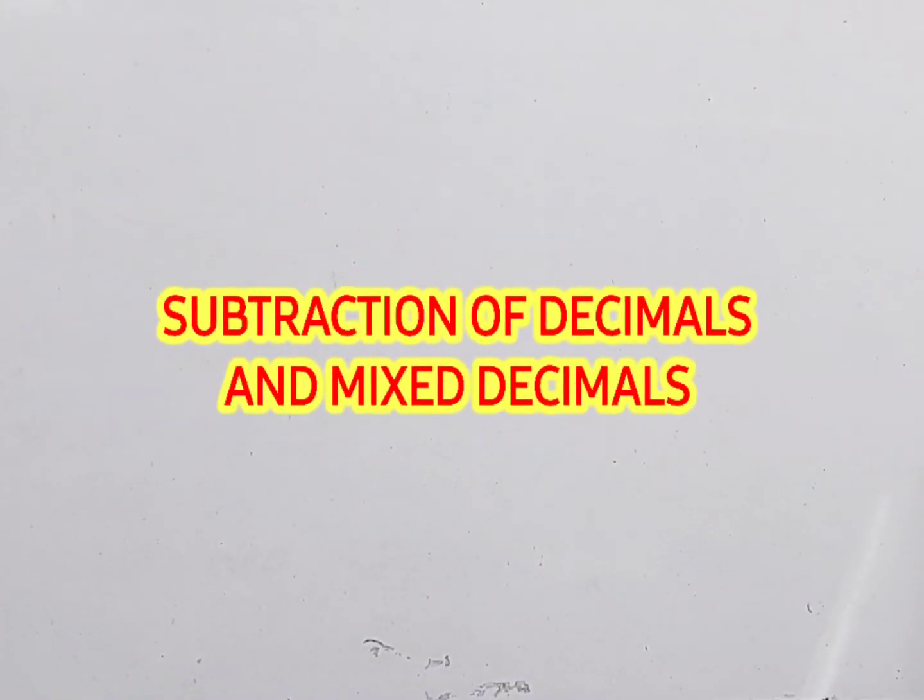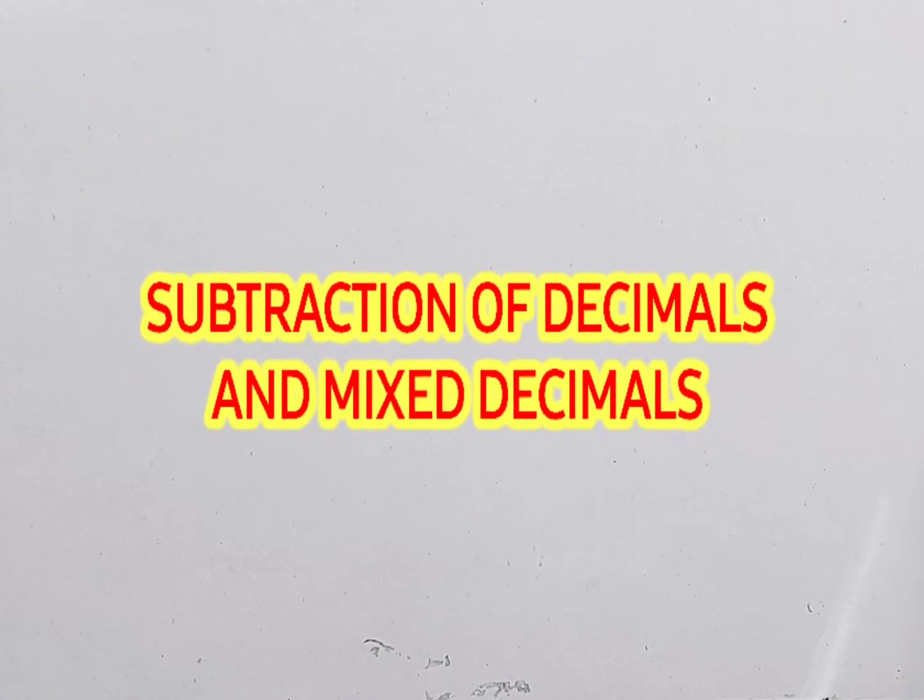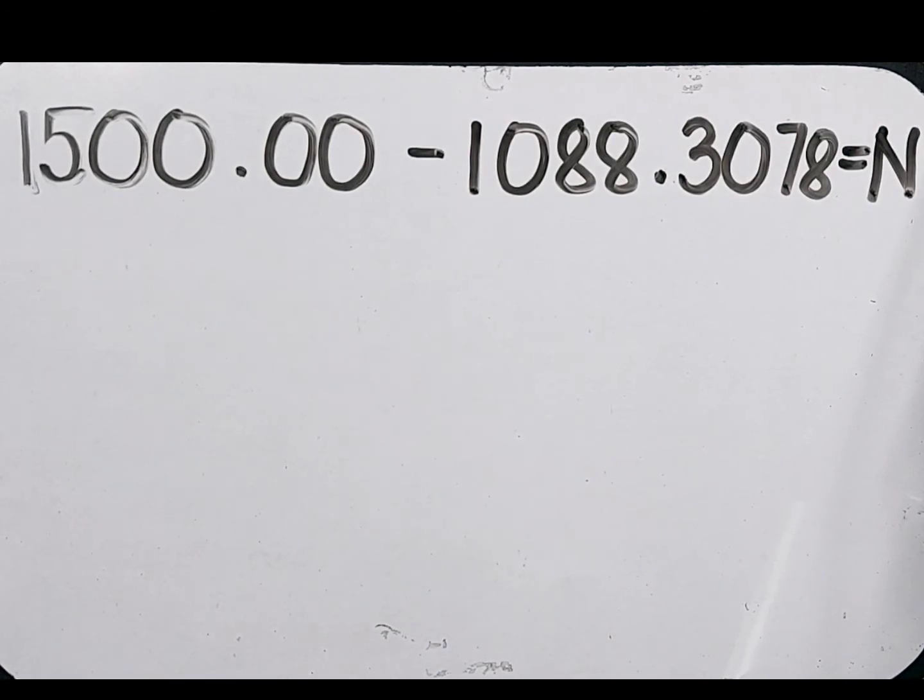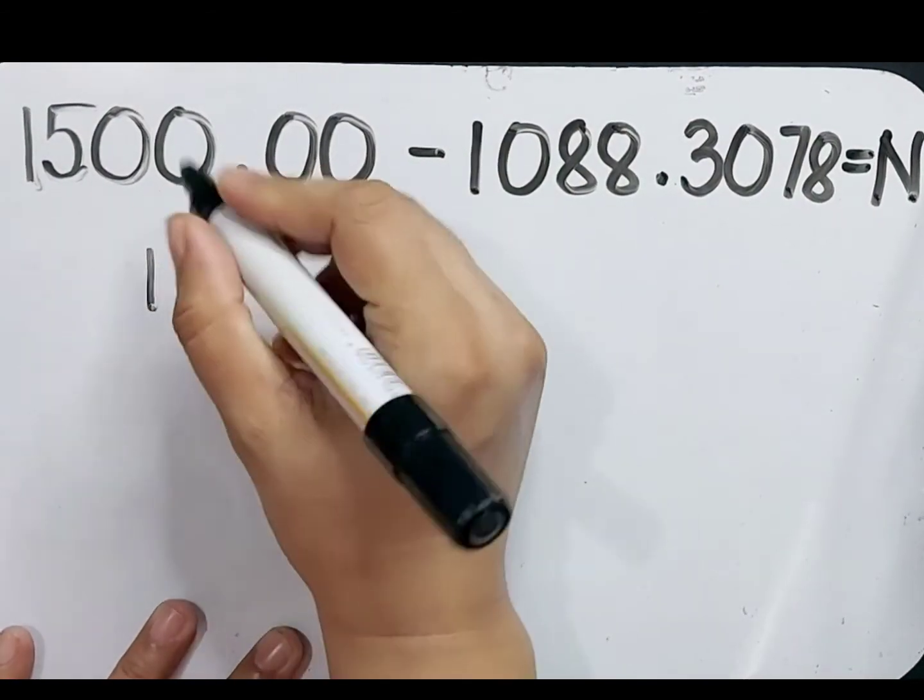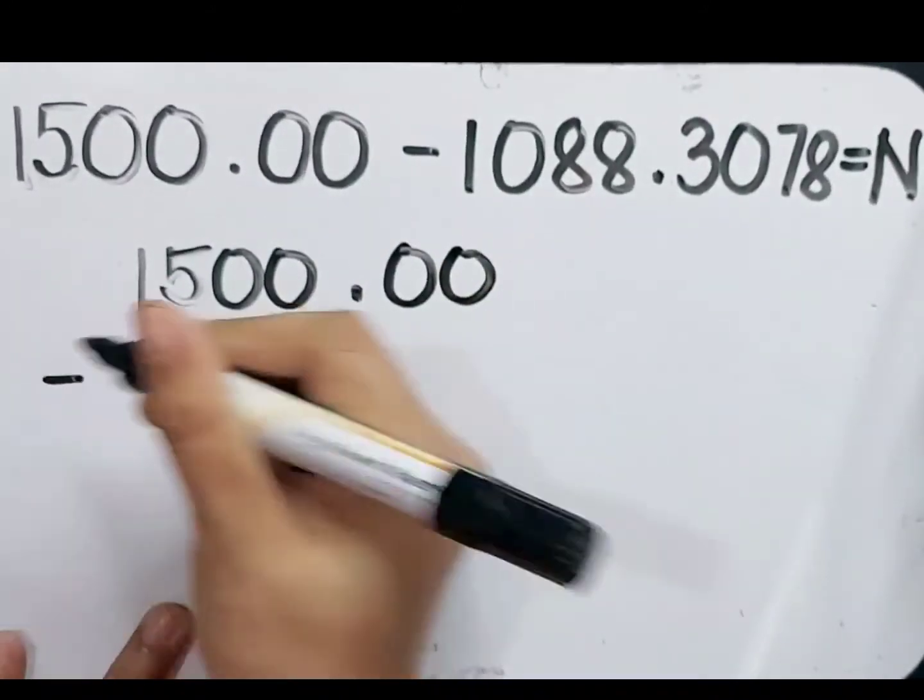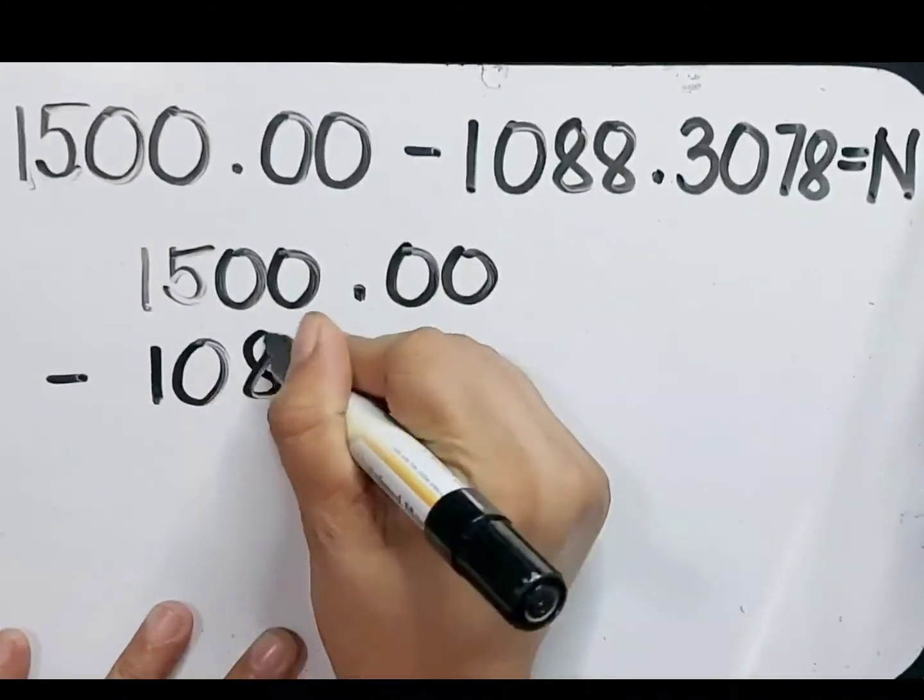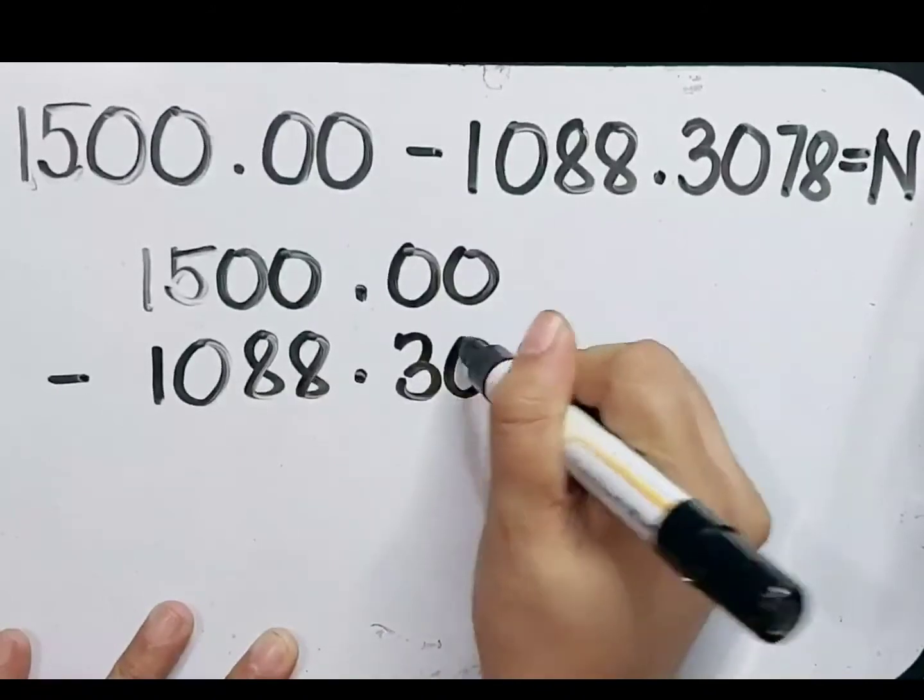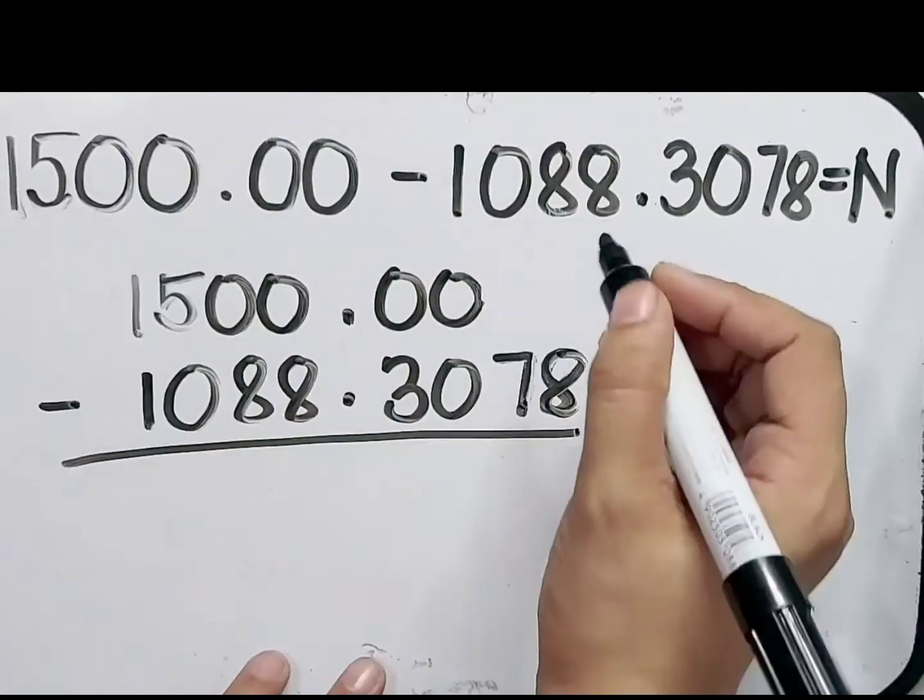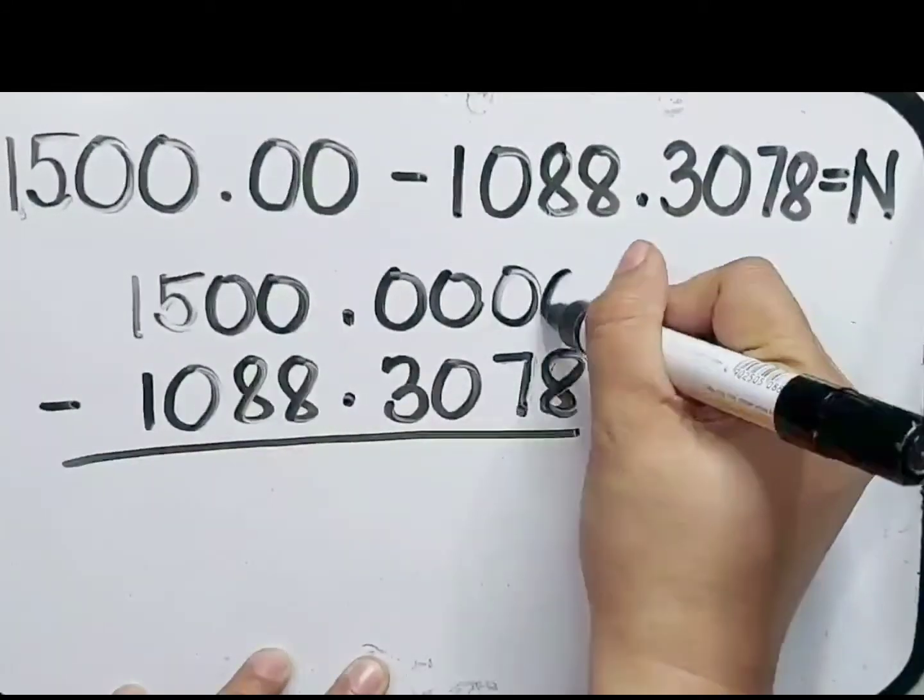Let's now move on to the subtraction of decimal and mixed decimals. Our first given is 1,500 minus 1,088.3078 equals N. So our first step is to write these numbers in a column. 1,500.00 minus 1,088.3078. Let's put two zeros on our minuend.